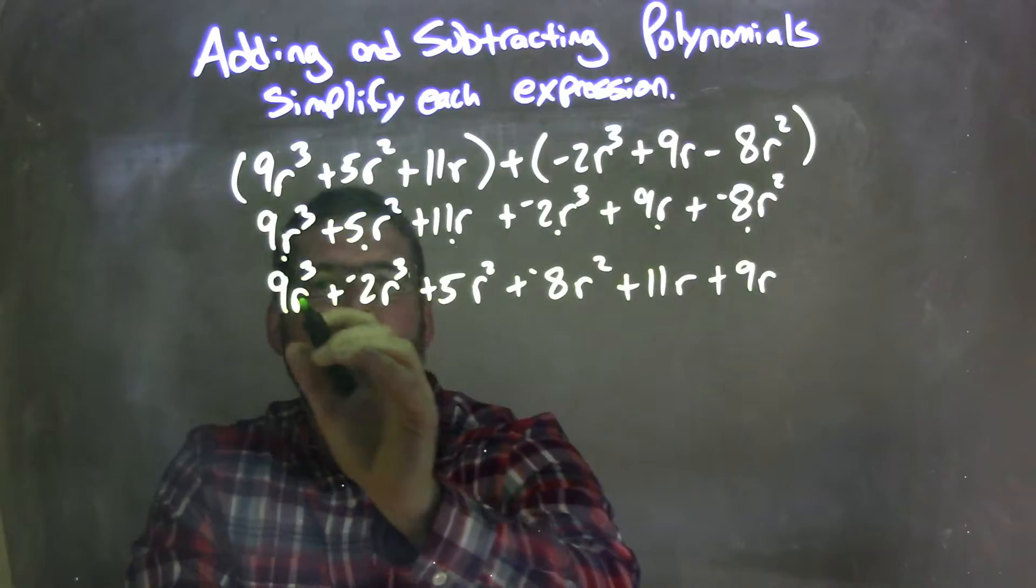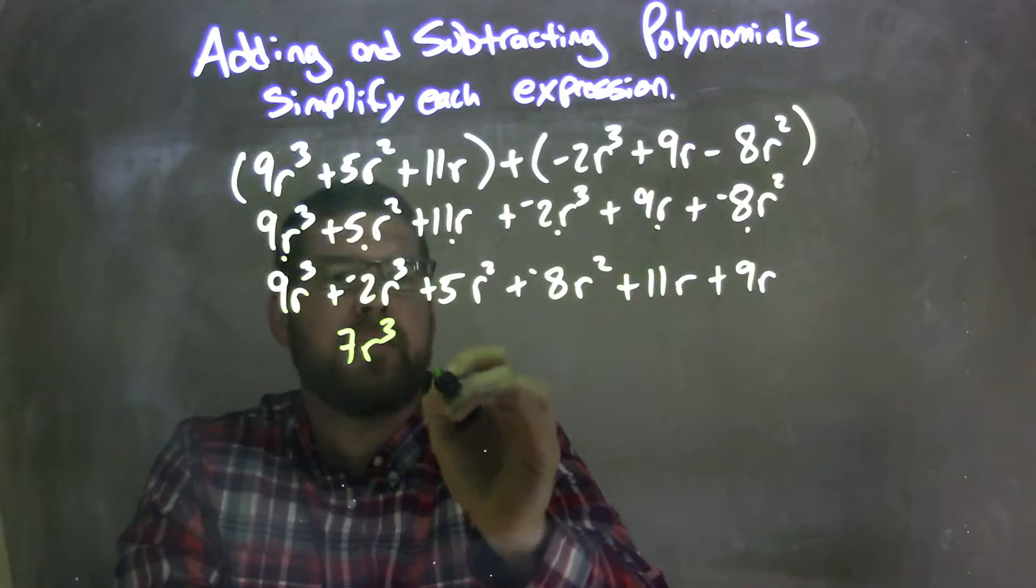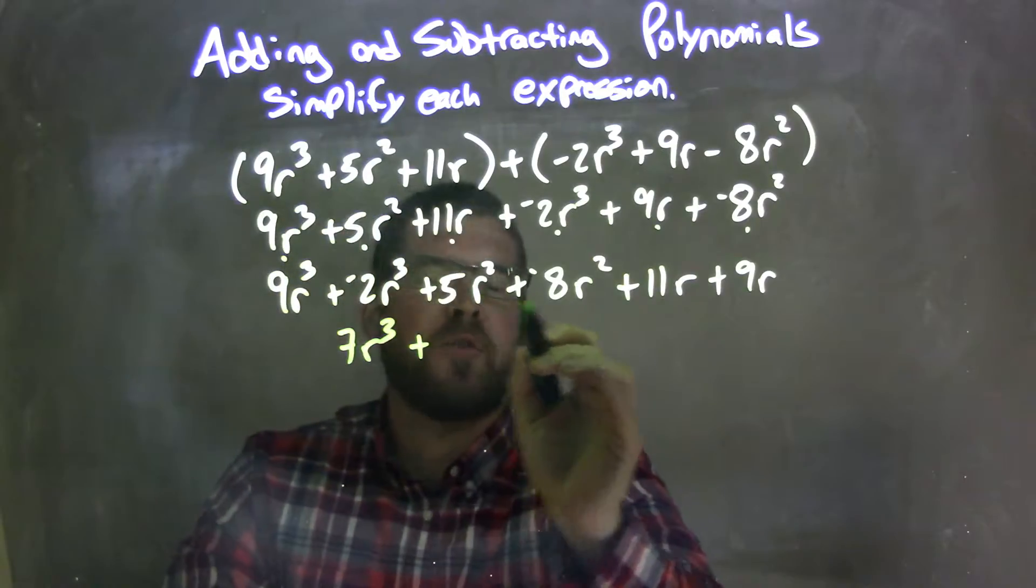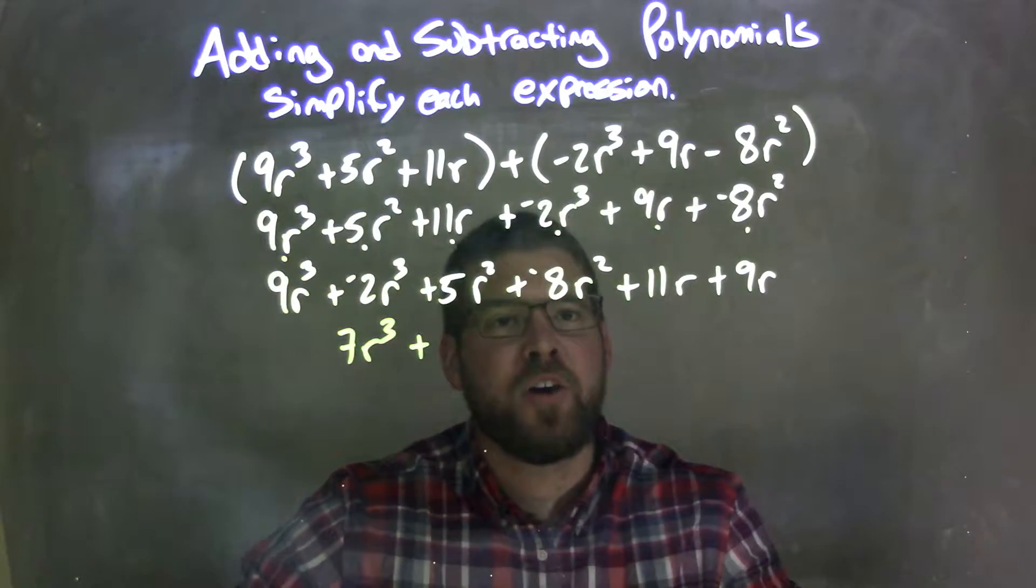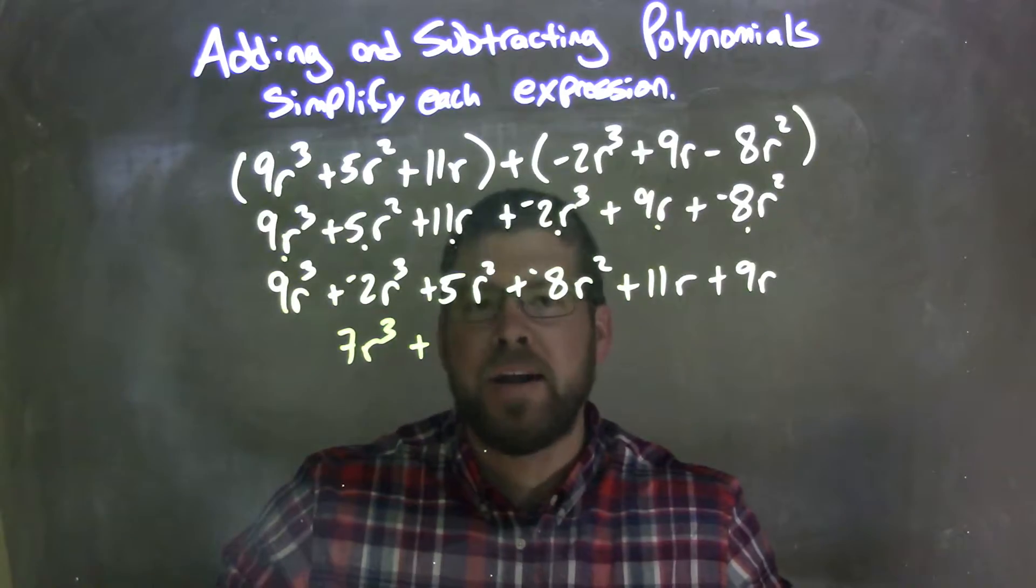So we combine our like terms. 9r³ plus a negative 2r³ is 7r³, plus 5r² plus a negative 8r² is minus 3r, negative 3r².